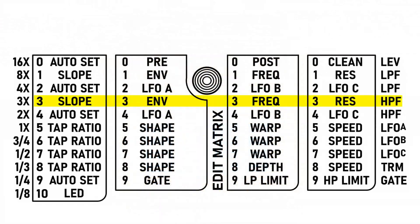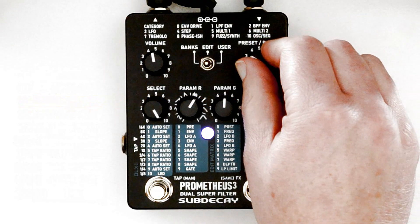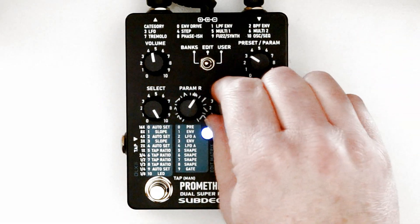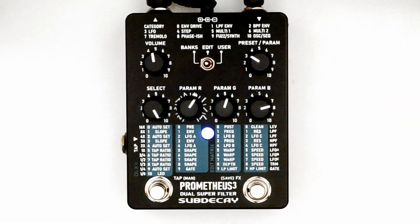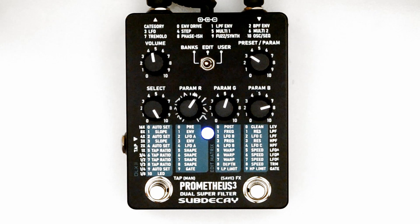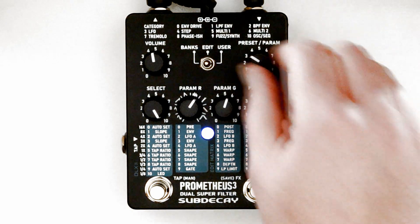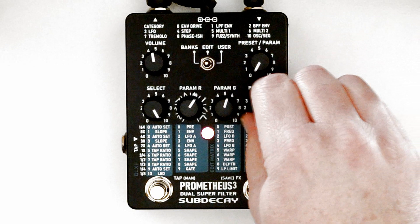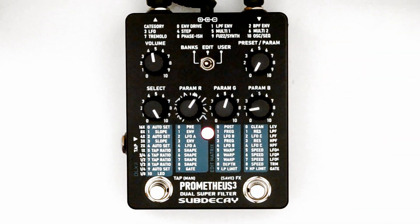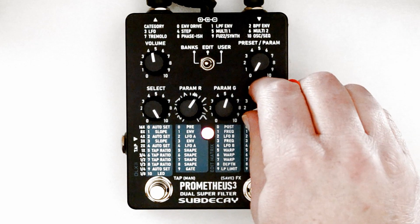The high-pass filter parameters work the same way. Use similar settings for both filters to create a bandpass filter. Mix in some clean signal.